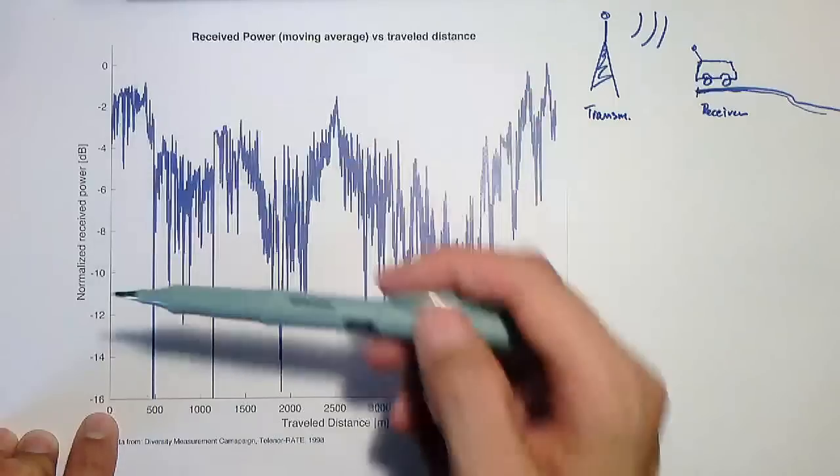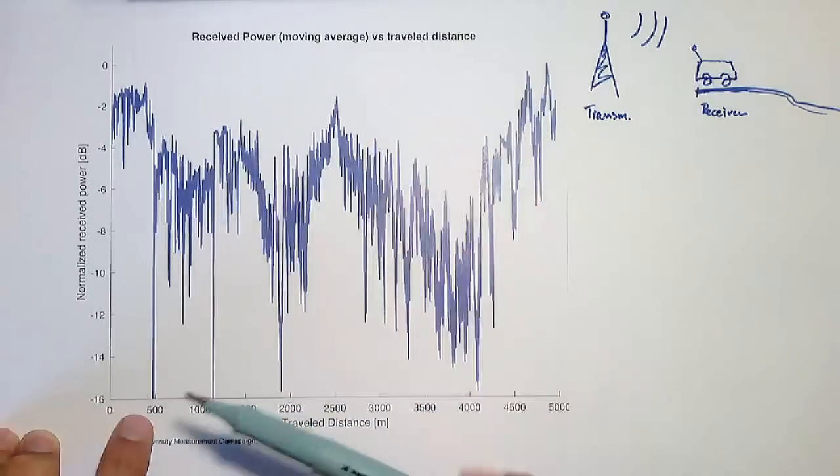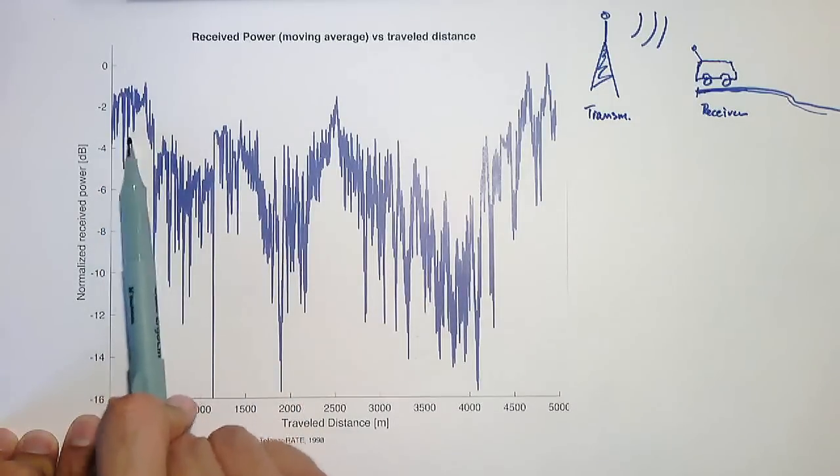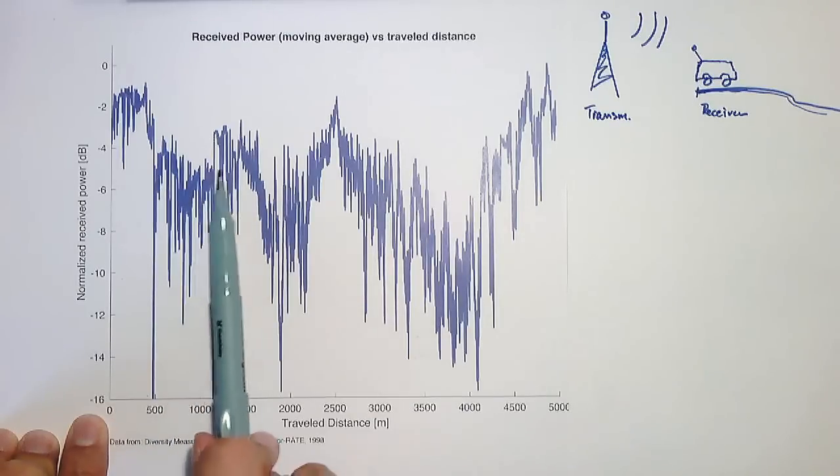It fluctuates quite a lot. This is normalized power in decibels. So what we have here is roughly a factor of 100 from the max to the min of the power. And we can see it fluctuates in somehow not very predictable manner.